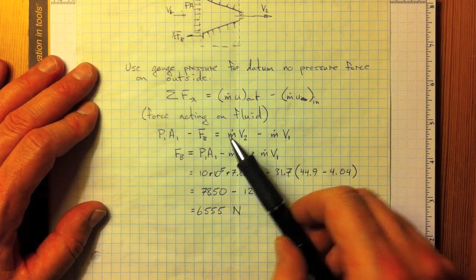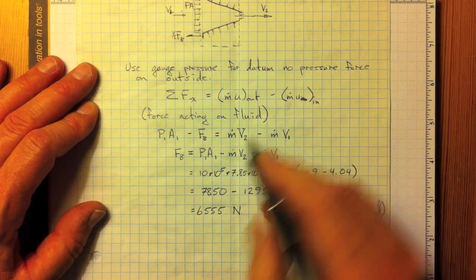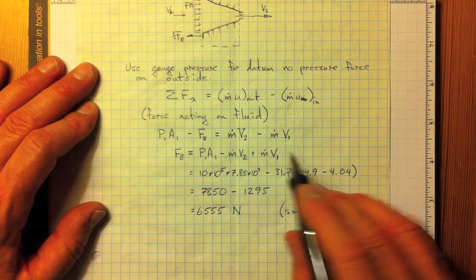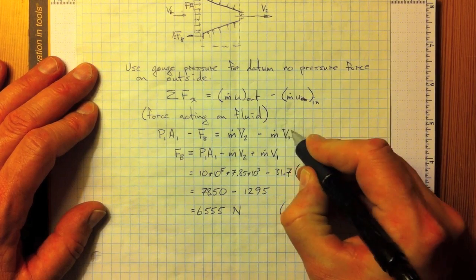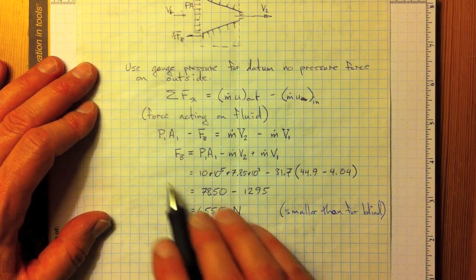So, M dot times capital V2, the total velocity of the flow moving here, minus M dot times capital V1, the total velocity of the flow coming in there.